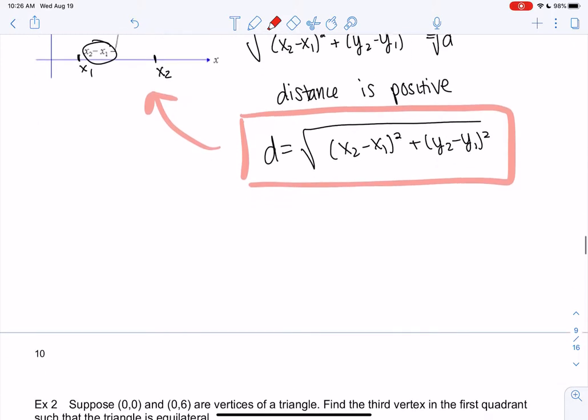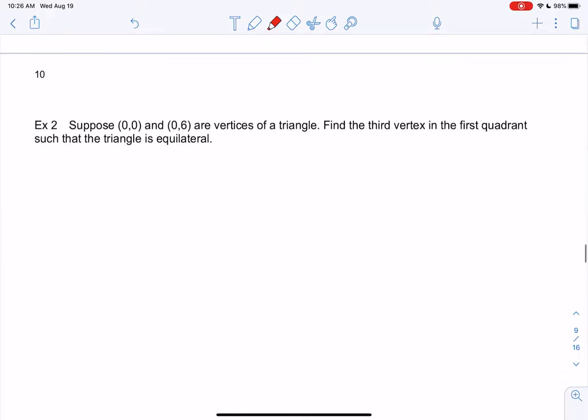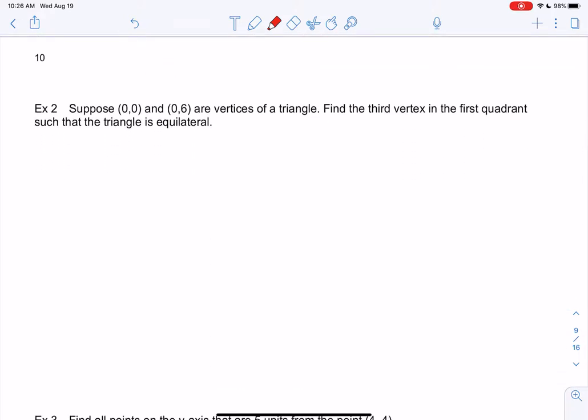So let's try an example. Let's suppose we have 00 and 06 are vertices of a triangle, and I want to find the third vertex in the first quadrant so that it makes an equilateral triangle. So we're making a triangle. An equilateral triangle means all the sides are the same. What is this point?